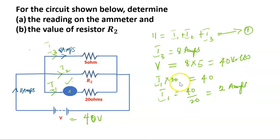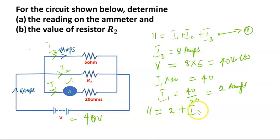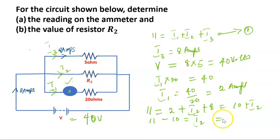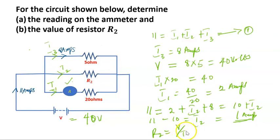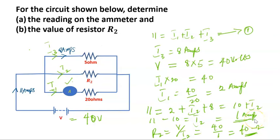The second part asks us to determine the value of resistor R2. From equation one: 11 equals I1 plus I2 plus I3. Substituting: I1 is 2, I3 is 8, so 11 equals 2 plus I2 plus 8, which gives 11 minus 10 equals I2, so I2 equals 1 amp. Since R2 equals V over I2, that is 40 over 1, R2 equals 40 ohms.